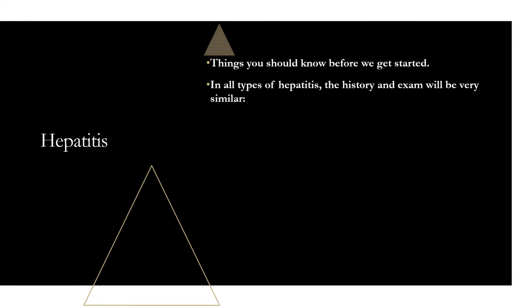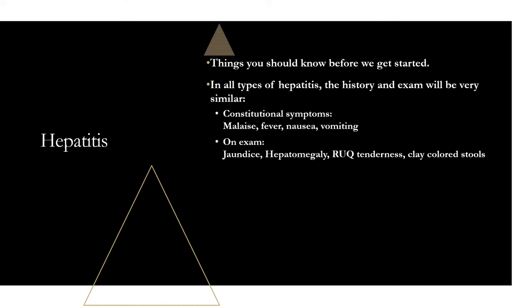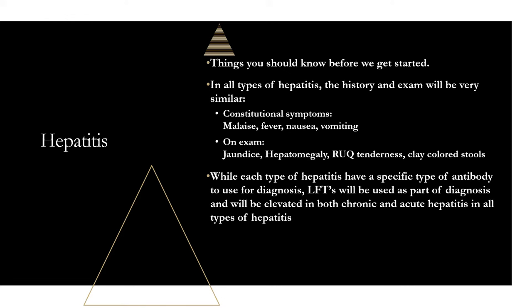In all types of hepatitis, the history and exam is going to be pretty similar. You're going to have nonspecific constitutional symptoms — malaise, fever, nausea, vomiting. On exam: jaundice, hepatomegaly, right upper quadrant tenderness, and clay-colored stools. This is all due to the breakdown of red blood cells and bilirubin excess. Because it's nonspecific, they can't really ask you a question based off just the history and exam — it could be any of the hepatitis types.